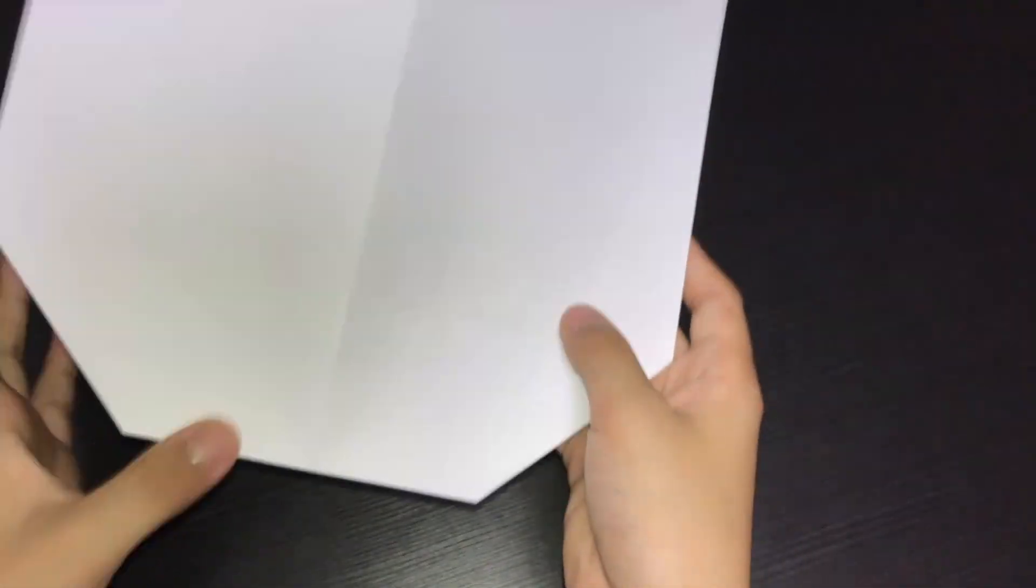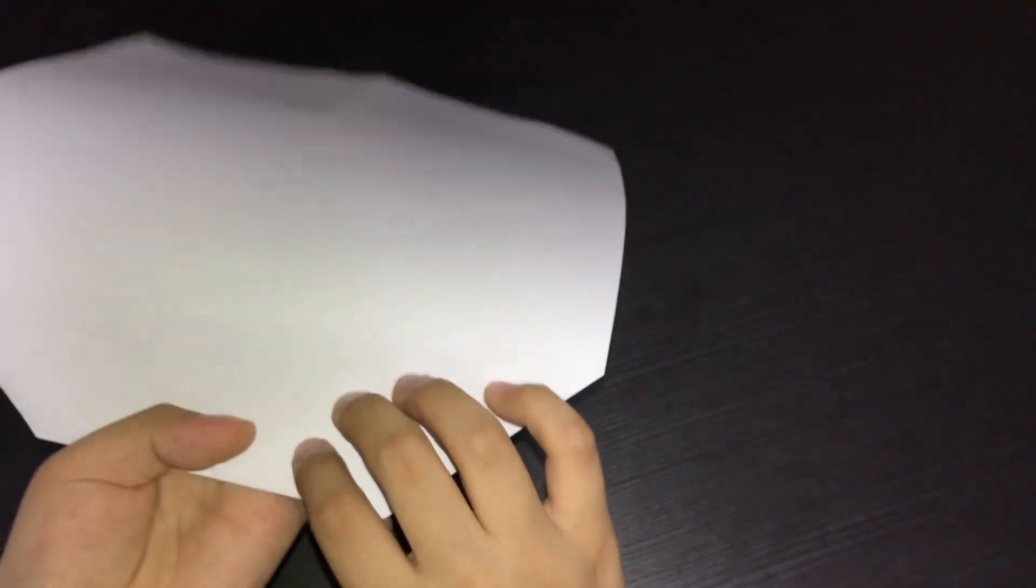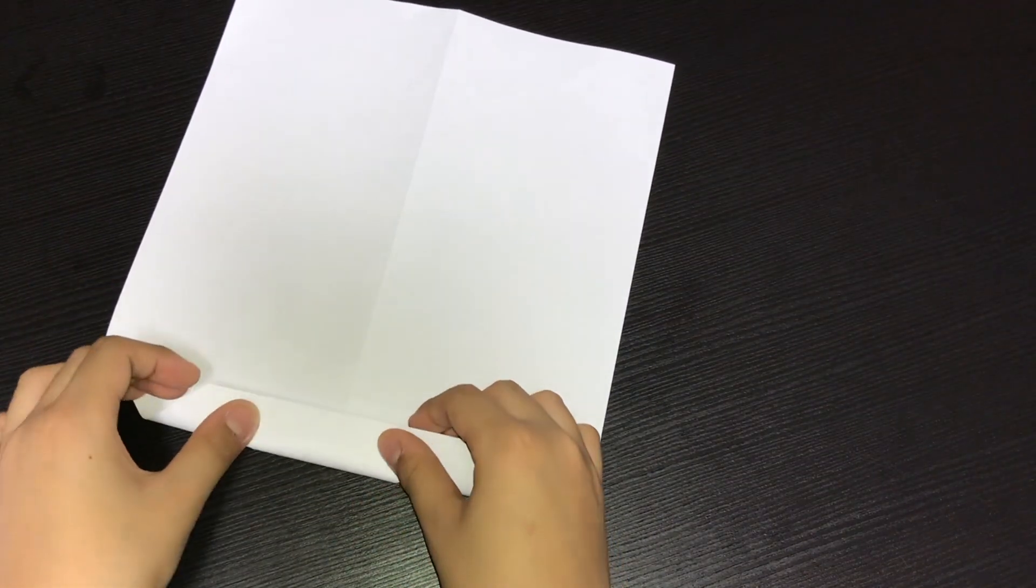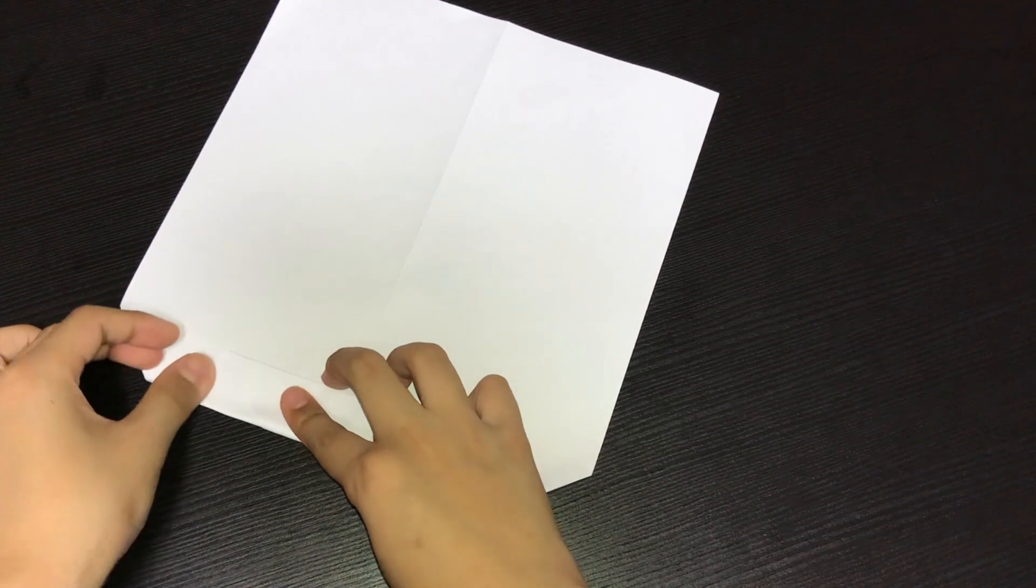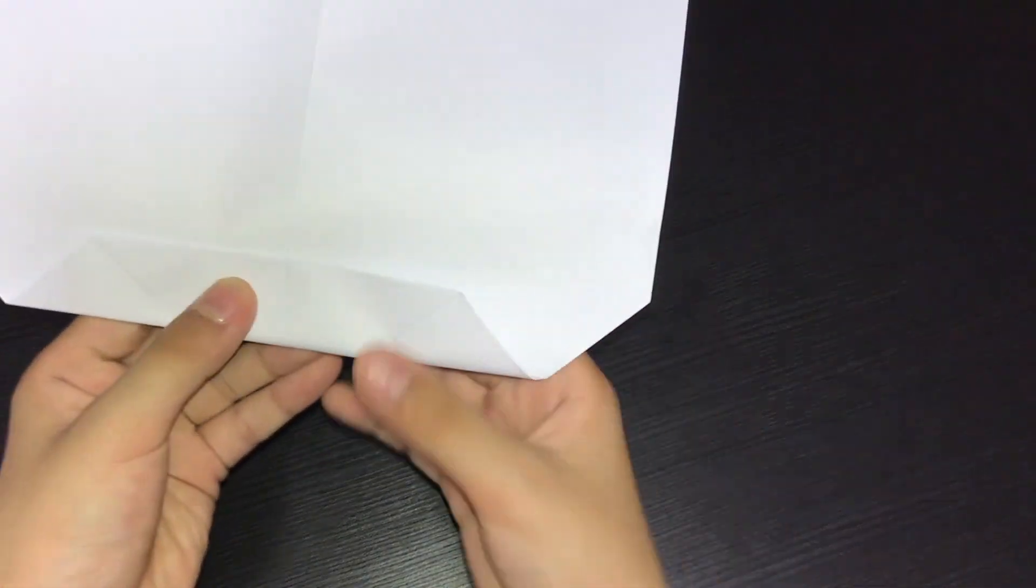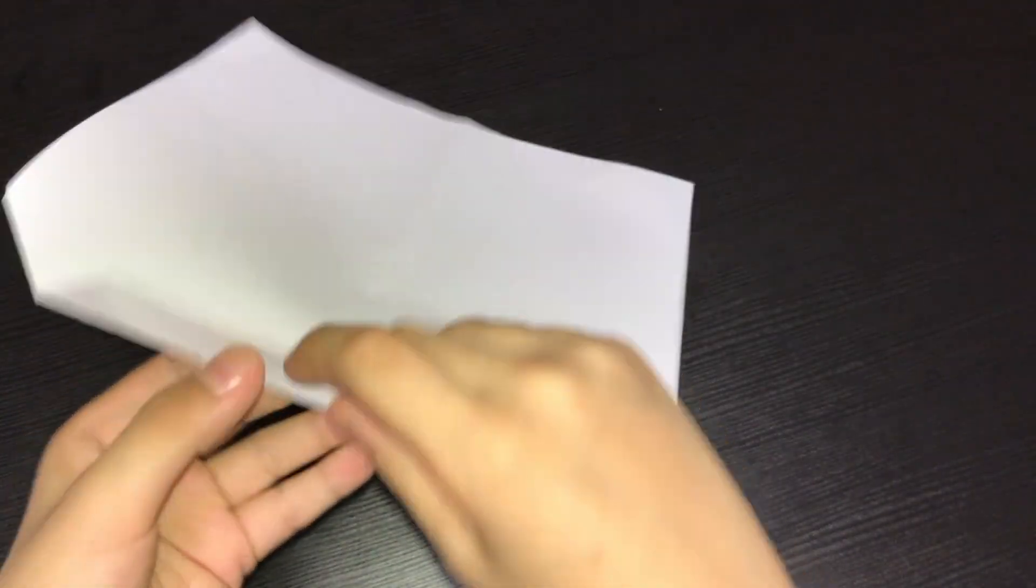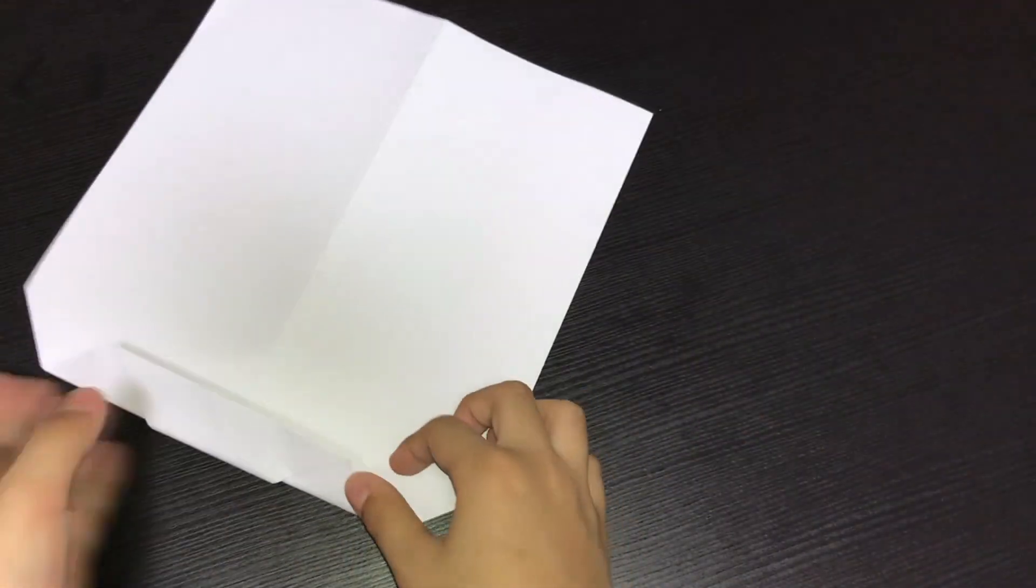You can kind of see the invisible line here. Use the invisible line to fold it in half. And the thing to note is this should be very straight. I want this point to go on to this edge.